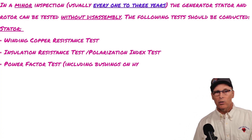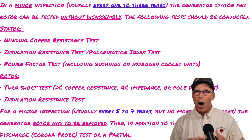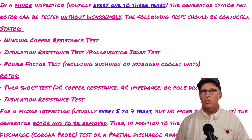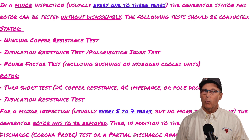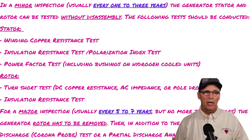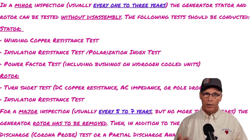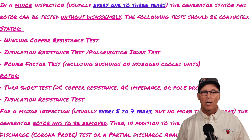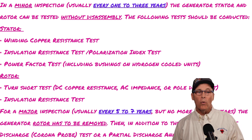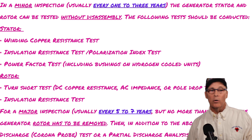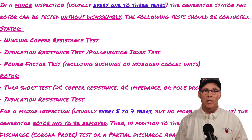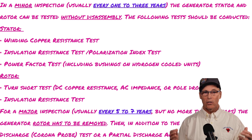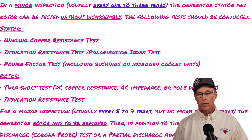For a minor inspection, typically once every one to three years, you don't have to disassemble the machine, but you'll do a winding resistance test, insulation resistance test, and power factor test for the stator. For the rotor, you'll do the turn short test and the insulation resistance test. That covers the minor inspection every one to three years.